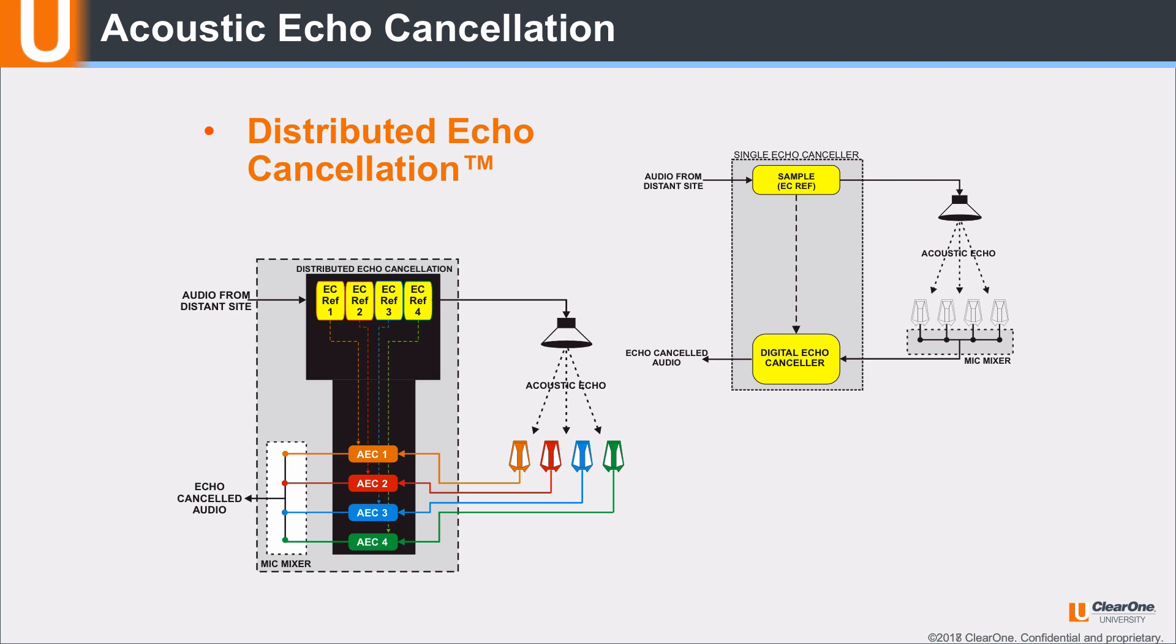Another major advantage has nothing to do with the echo canceler. ClearOne's distributed echo cancellation puts the echo canceler prior to the mic mixer. A function of the mic mixer is voice activation. Because the acoustic echo has already been removed, there is little or no chance that audio from the loudspeaker, the acoustic echo, can falsely activate a mic as it can in a single-channel echo canceler, where the mic mixing functions have to occur prior to the echo canceler. All ClearOne audio conferencing products use distributed echo cancellation.